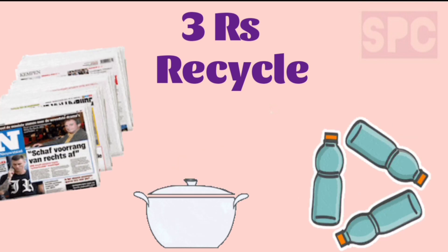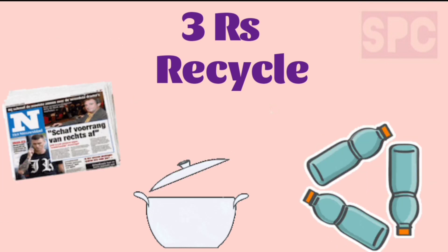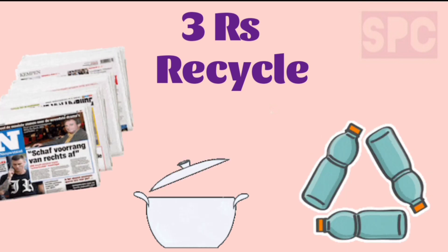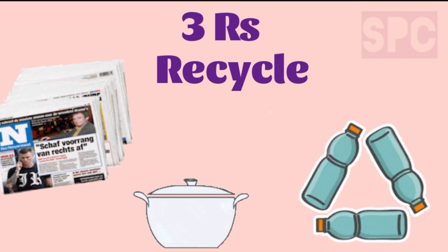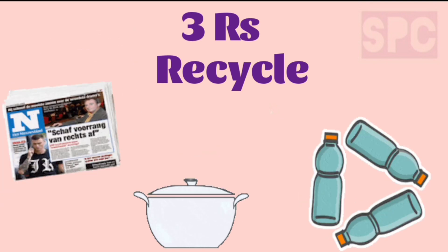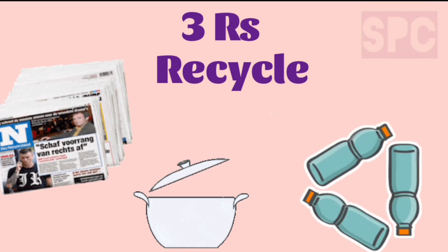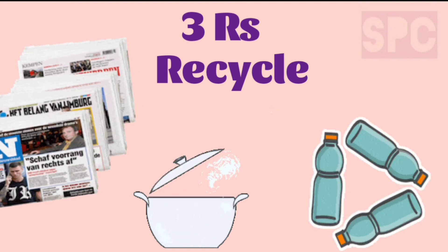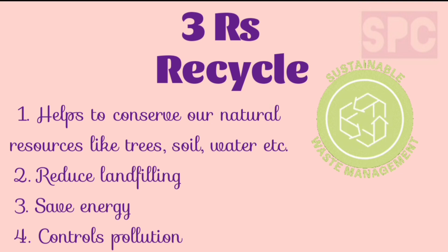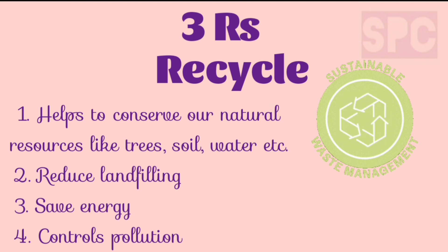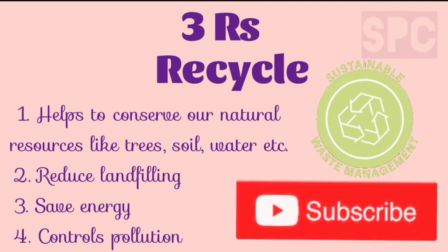Reusing things also helps in controlling the amount of garbage we create. Old newspapers, notebooks, utensils, and glass bottles should be given to rag pickers instead of throwing them in the dustbin. These rag pickers take these waste materials to the recycling center where they are recycled. Recycling helps to conserve our natural resources, reduce landfilling, save energy, and control pollution. It will go a long way to keep our earth clean.